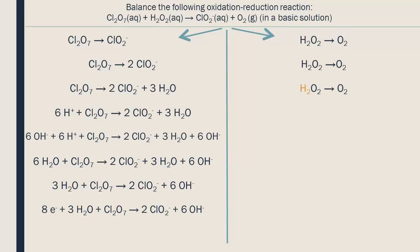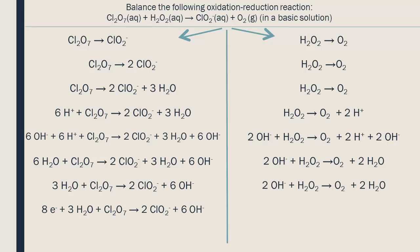We balance the hydrogens by adding protons. We add the same number of OH- ions to each side. The H+ and OH- ions on the same side can bind to form water. Now, we simplify the number of water molecules, but here, no simplification is needed.